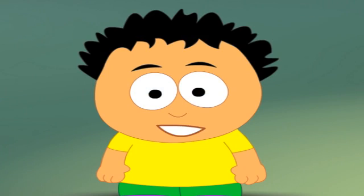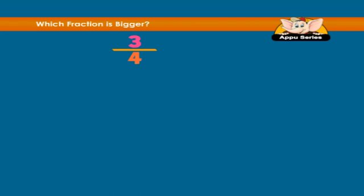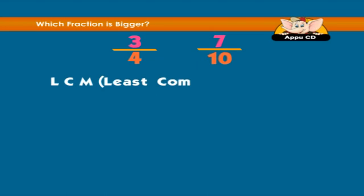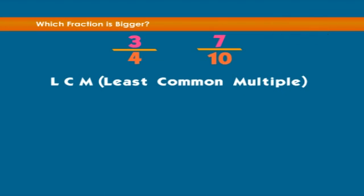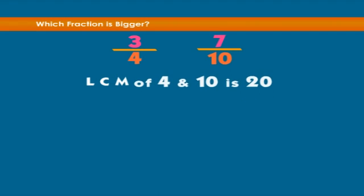Three fourths or seven tenths? Now let's look at some examples where it's not easy to tell just by looking at the numbers. Which is greater, three fourths or seven tenths? In this case, we can use the least common multiple for our new denominator. The LCM of four and ten is twenty.